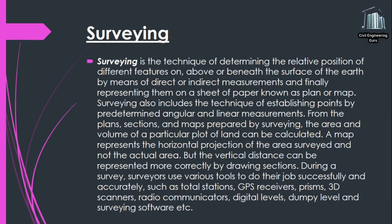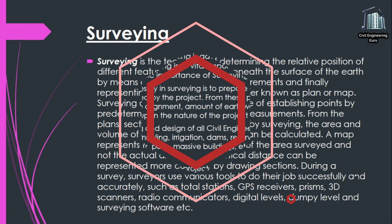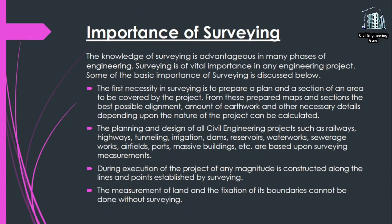A map represents the horizontal projection of the area surveyed and not the actual area, but vertical distance can be represented more correctly by drawing sections. During a survey, surveyors use various tools to do their job successfully and accurately, such as total stations, GPS receivers, prisms, 3D scanners, radio communicators, digital levels, dumpy level, and surveying software. The knowledge of surveying is advantageous in many phases of engineering.